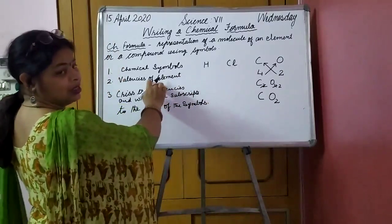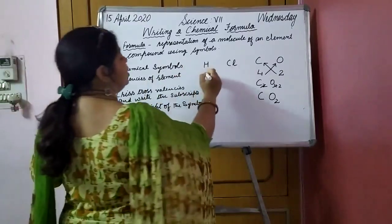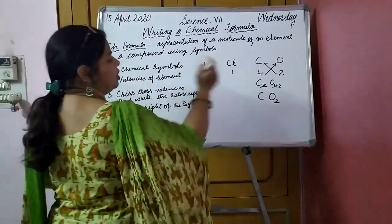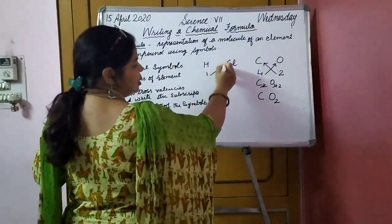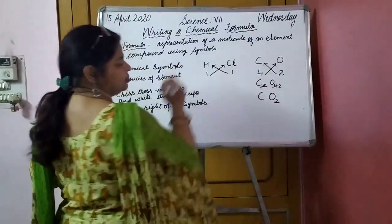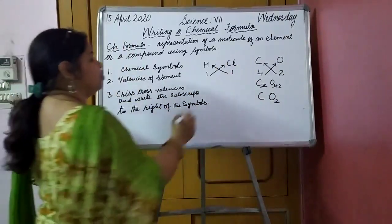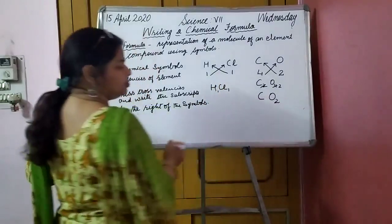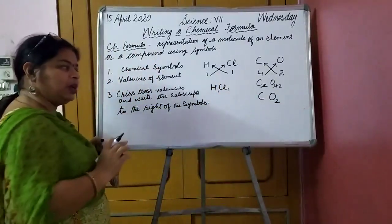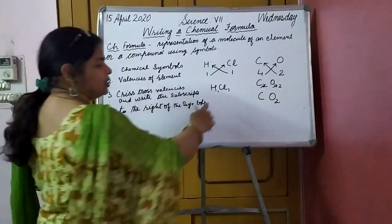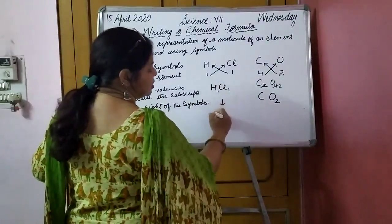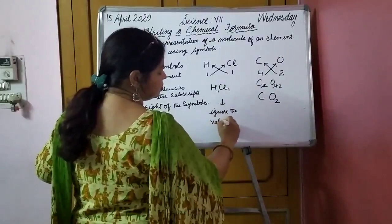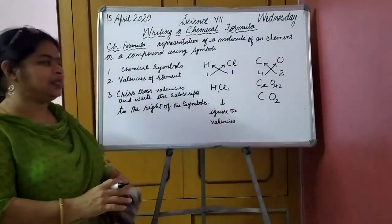Now what are the valencies? We will write down the valencies of the elements below them. So it will be 1 and 1. Now the third step: criss-cross the valencies. When you criss-cross, it becomes H1Cl1. If you don't write 1, it will still be understood — it is always 1, so we ignore it. Same way here, it is not necessary to write C1O2; it is understood that it is 1 C. When it is more than 1, then only we need to mention it.